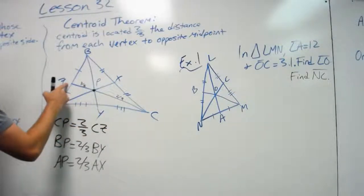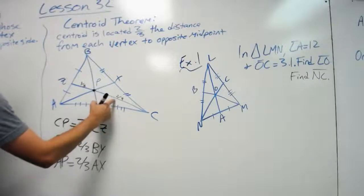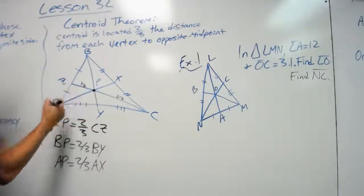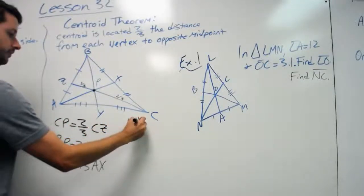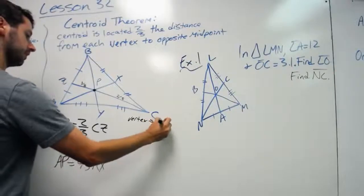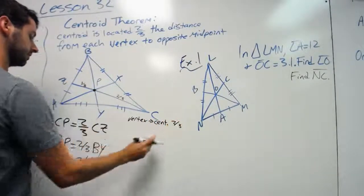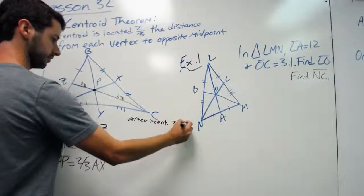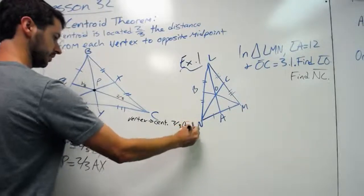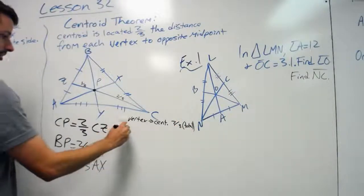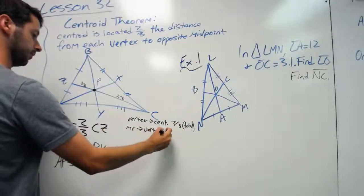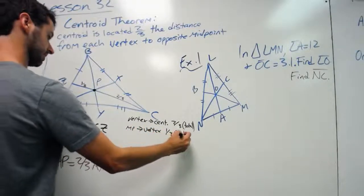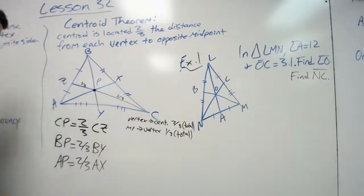This line right here is two-thirds. This would make this one-third. So from vertex to centroid is two-thirds of the total distance. And then from the midpoint to vertex would be one-third of the total distance on that line.